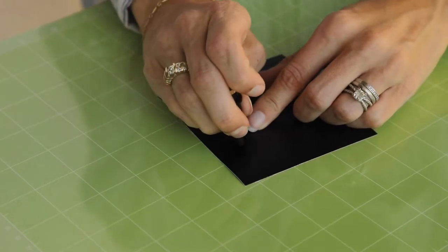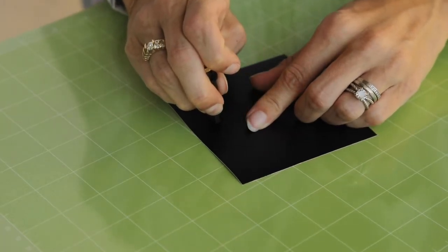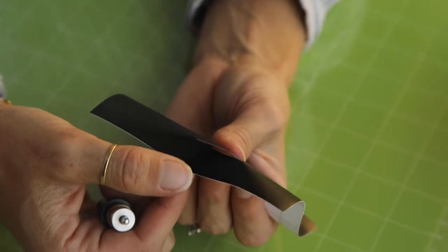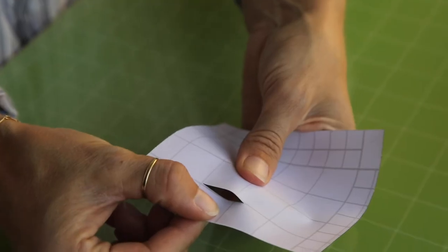Test the blade height by manually dragging the blade on a scrap piece of vinyl. The blade height is too long if the blade has cut through the vinyl medium and the adhesive backing.